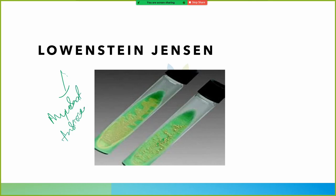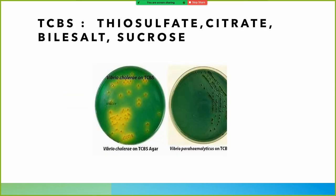Lowenstein-Jensen media shows rough, tough, and buff colonies of Mycobacterium tuberculosis. On TCBS: Vibrio cholerae shows yellow colonies, while Vibrio parahaemolyticus shows green colonies.